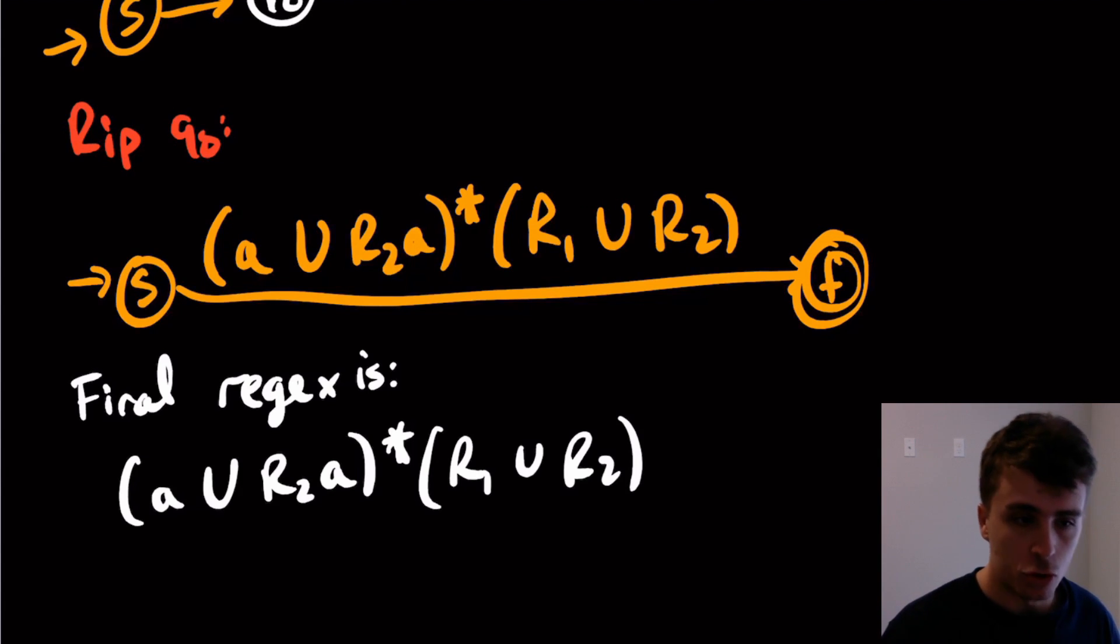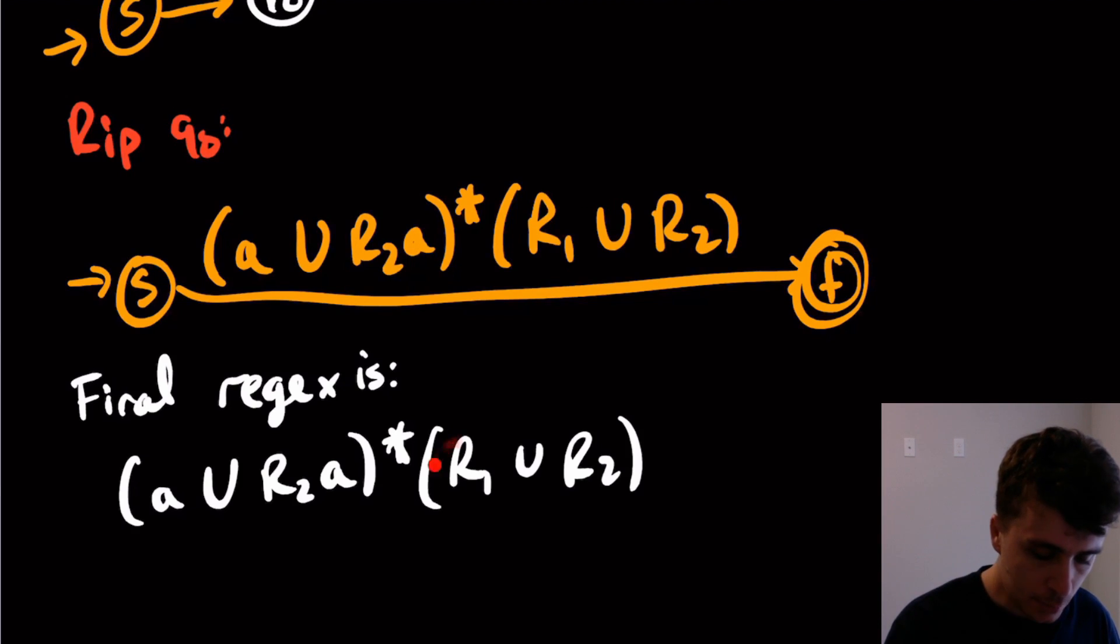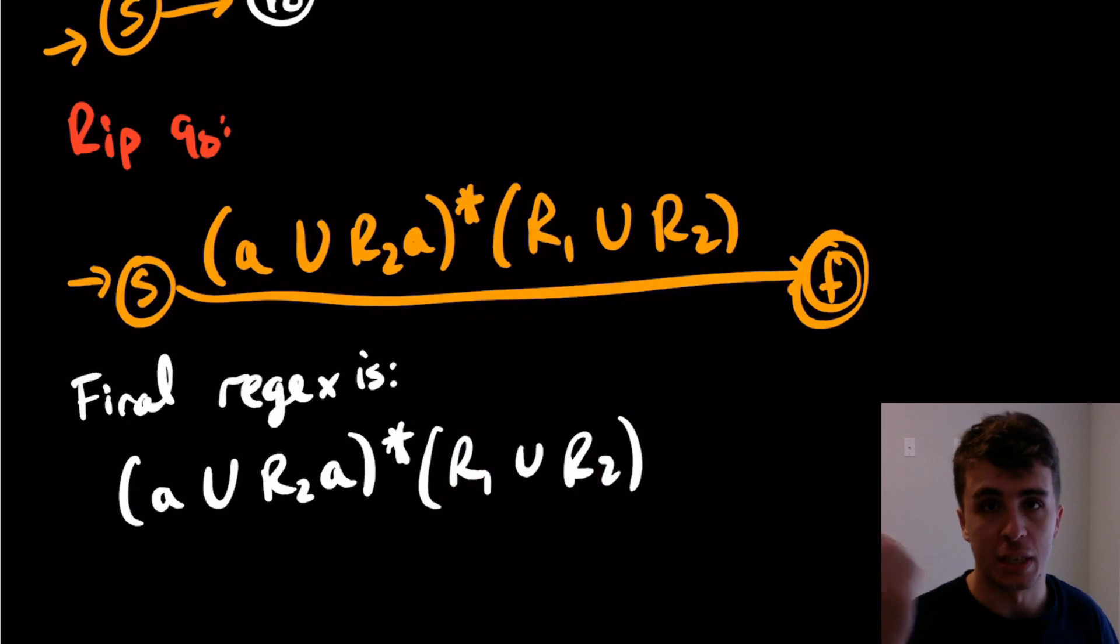So the transitions were getting a little longer. So we had to do the shortening by renaming a regex as something else to make this final regex look presentable, at least. But I could substitute in the R1 and the R2 regex that we actually calculated before, and then we would get the actual final regex. But this is just the shortened one.